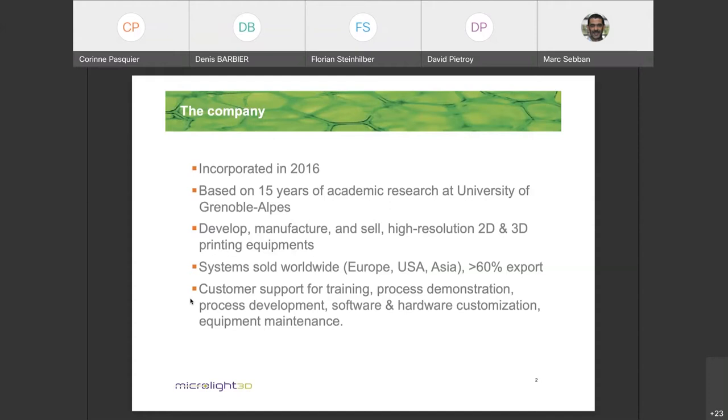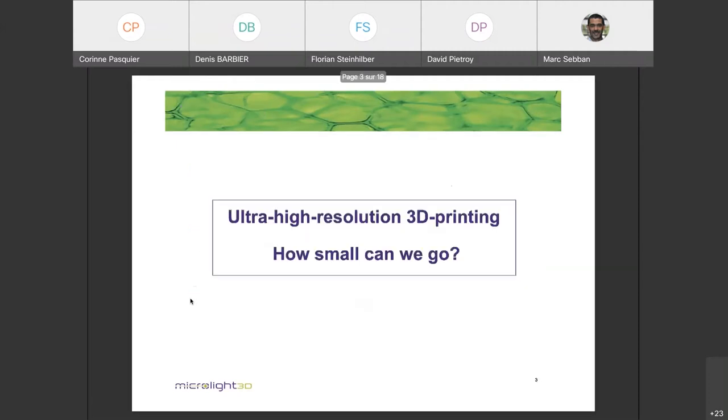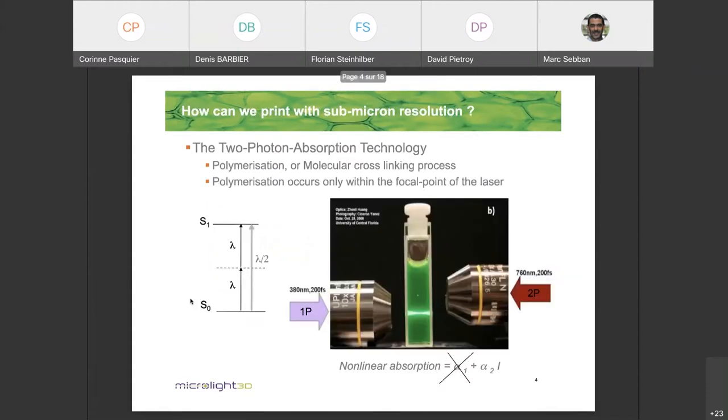And also to improve our equipment and software based on their requirement. So let's look at the 3D printing technology that we call the two photon absorption technology. How can we basically print below the optical limit, below the optical standard resolution? It's based on the fact that we use a nonlinear interaction between the material and the laser.